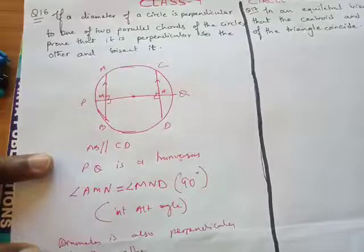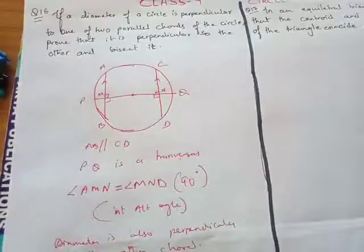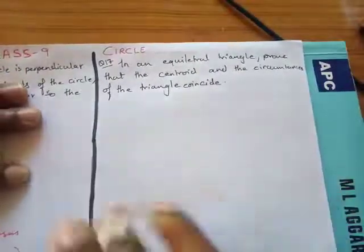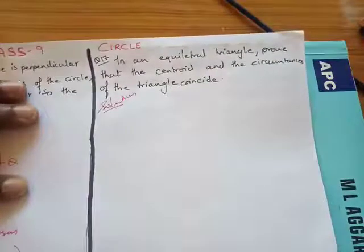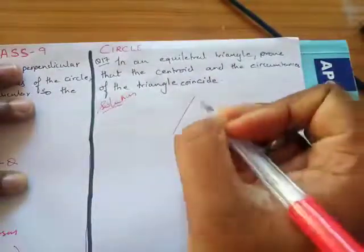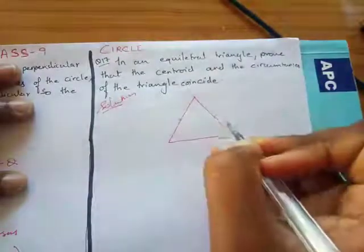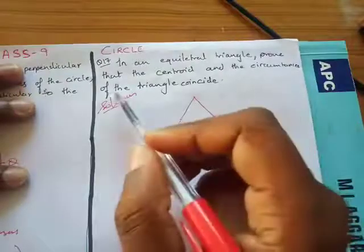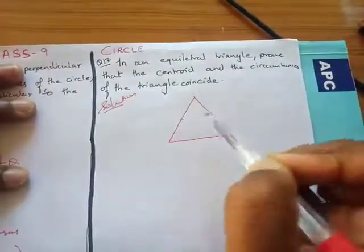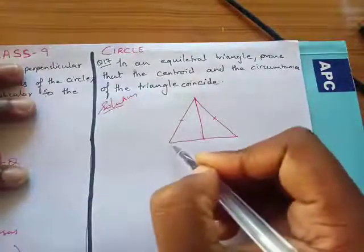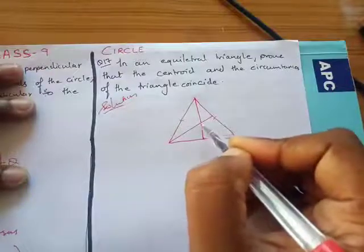So the diameter is also perpendicular to the other chord. Now let's do question number 17. We'll read the question and convert it into a diagram. In question 17 it says: in an equilateral triangle — and in an equilateral triangle all sides are equal — prove that the centroid and the circumcenter of a triangle coincide, meaning the center of the inscribed circle and the centroid meet at the same point.